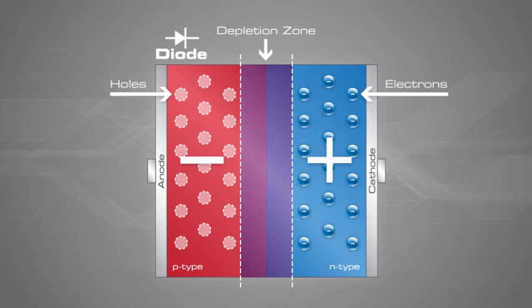Unfortunately, one cannot generate power from this electrical imbalance. However, the stage is set to see how the p-n junction functions as a diode.